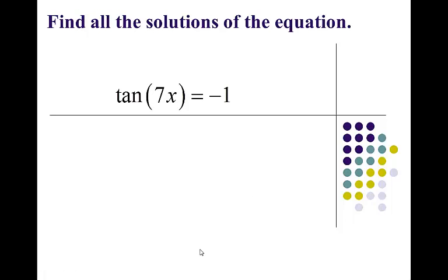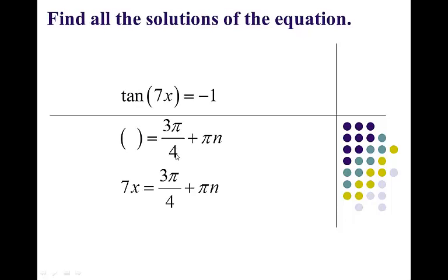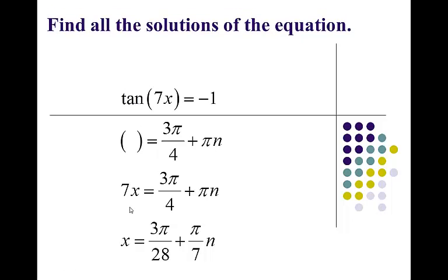How about tangent 7x equals negative 1? I don't let the 7x influence my first move. Tangent is negative in quadrants 2 and 4, and the tangent of 45 degrees is 1, so I want either 3 pi over 4 or 7 pi over 4 — we usually stick with 3 pi over 4 because it's the first one. So 3 pi over 4 plus pi n represents all possible angles whose tangent is negative 1, where n can be positive or negative integers. I set 7x equal to it and then divide both sides by 7. You get 3 pi over 28 plus pi over 7 times n. Normally the tangent curve has a period of pi, but with a 7 there it ends up with a period of pi over 7.